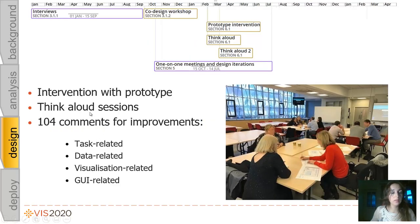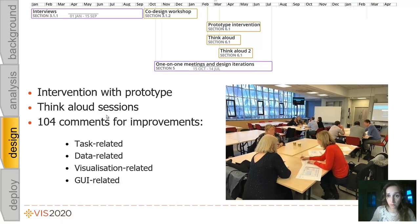Details of the intervention with prototype session are described in the paper and supplementary material. We asked participants to interact with a paper prototype and tell us about the match between tasks, the data used to generate QualCards, and the visual encodings used. We also had two think-aloud sessions in which participants interacted with a software prototype for QualDash. In total, we collected 104 comments from these sessions and used them to improve QualDash in four main areas: better task matching, data definitions, visual encodings, and graphical user interface elements.